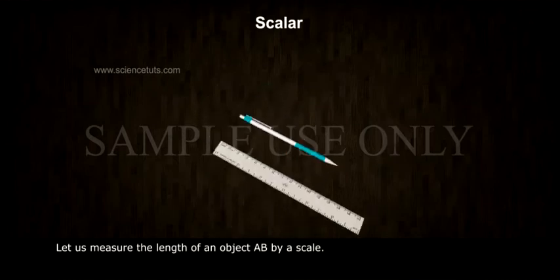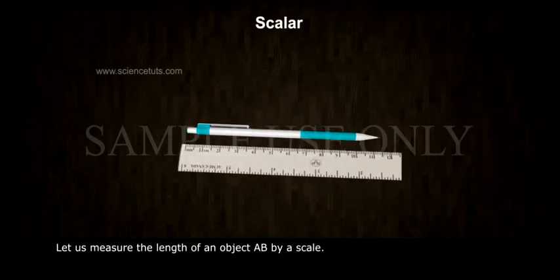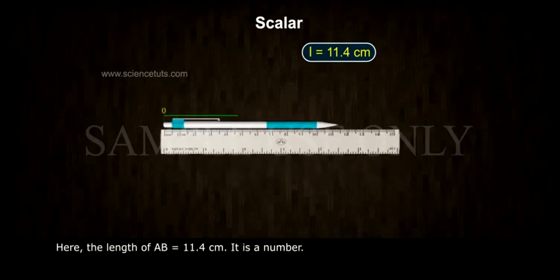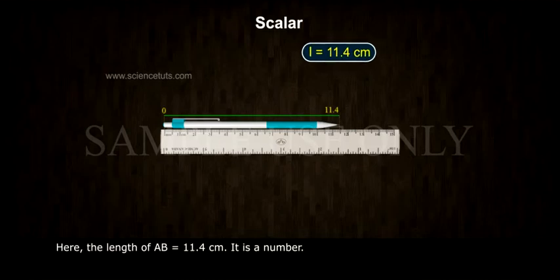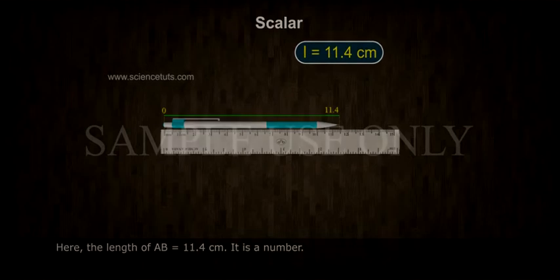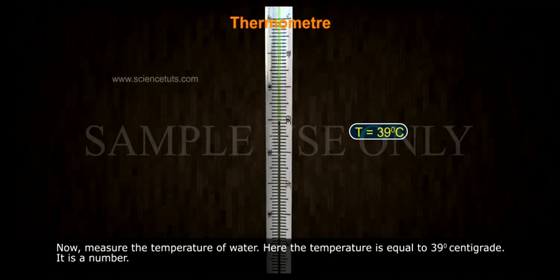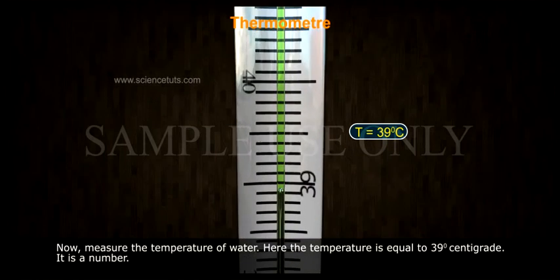Let us measure the length of an object AB by a scale. Here, the length of AB is equal to 11.4 cm—it is a number. Now, measure the temperature of water. Here, the temperature is 39°C. It is a number.